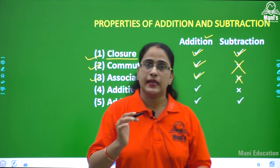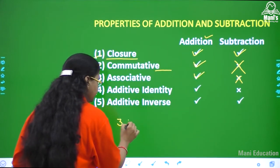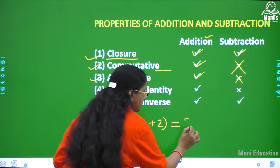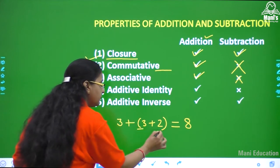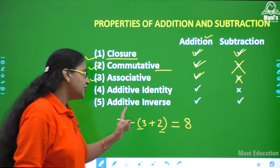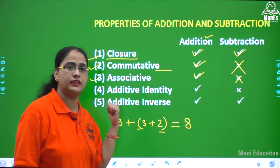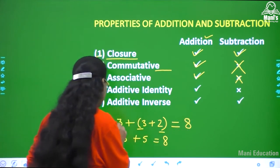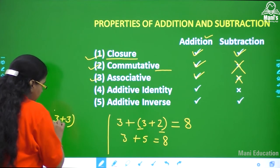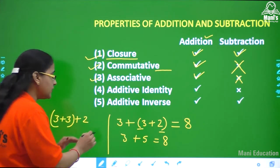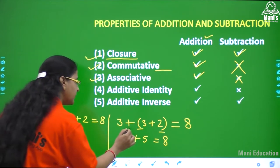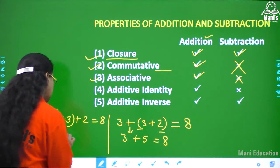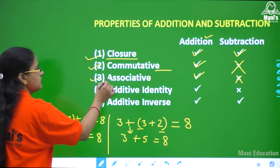The associative property involves three numbers. For example, 3 plus 5, we solve the bracket first: 3 plus 5 equals 8. In place of this, if I write 3 plus 3 plus 2, the answer is still 8. First we solve the bracket: 6 plus 2 equals 8. This is the associative property for addition.